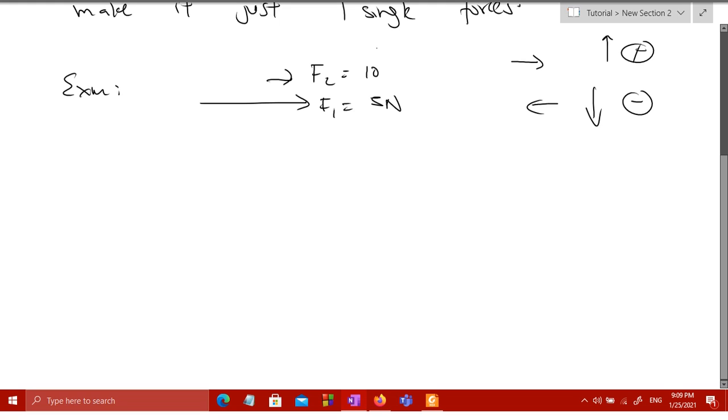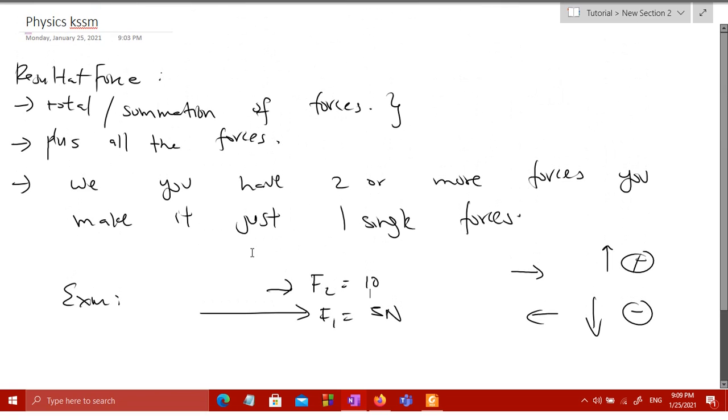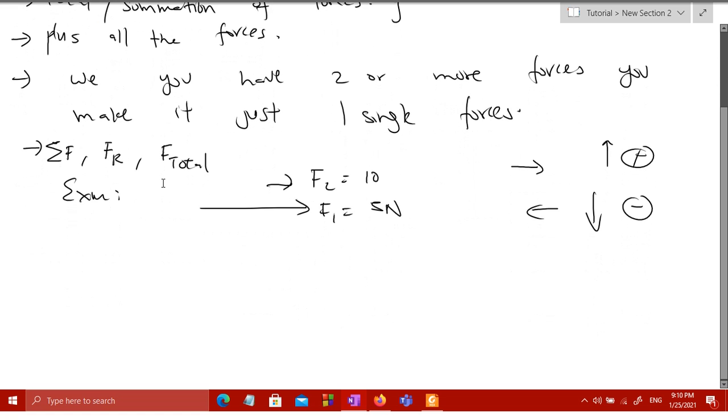I want to add the definition of the symbol - there are many symbols for this. This is sigma F, we call it FR for resultant force, or FT for total. I prefer sigma F as it indicates the summation. So sigma F is 15 Newton to the right. Don't forget the direction, because force is a vector quantity.